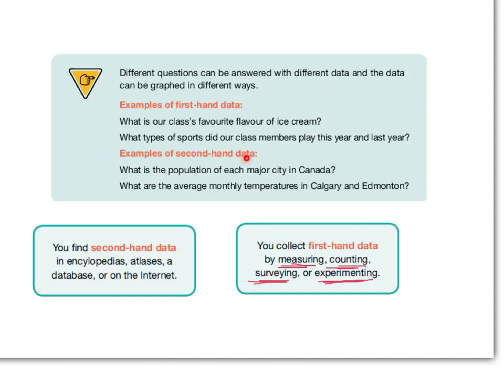Example of second-hand data: what is the population of each major city in Canada? Well, you wouldn't have collected the information about the number of people in each major city in Canada. That would mean you'd have to travel all across Canada and conduct those surveys. It's not something you're going to do. You're going to get that information from an encyclopedia, an atlas, a database, or somewhere on the Internet. That's considered second-hand data.